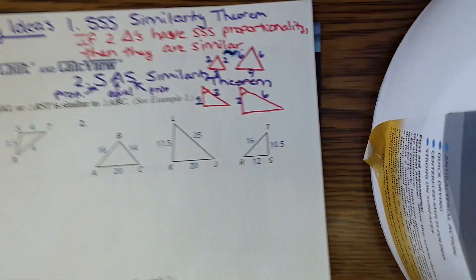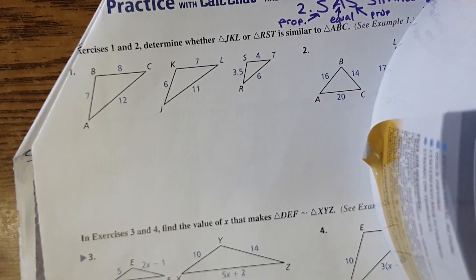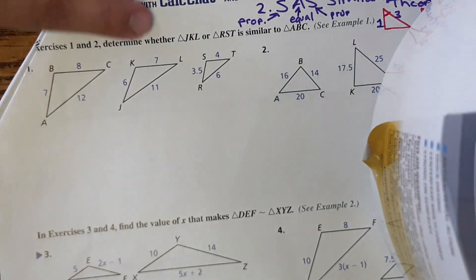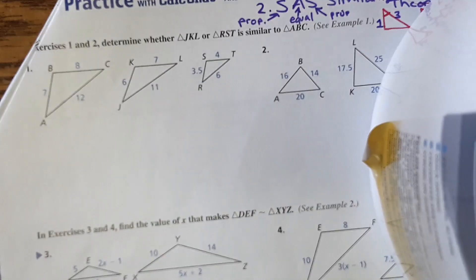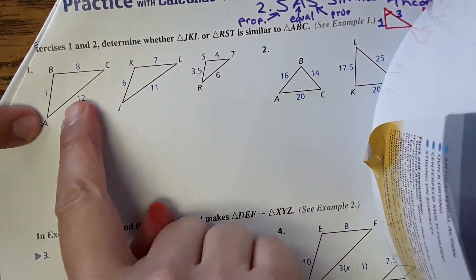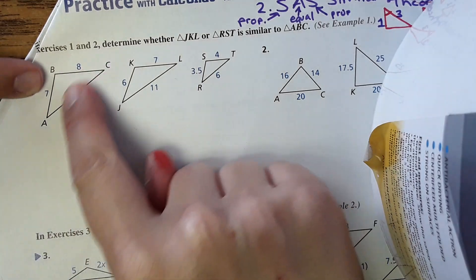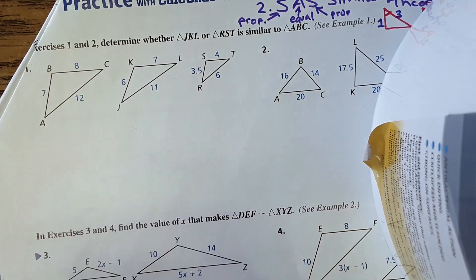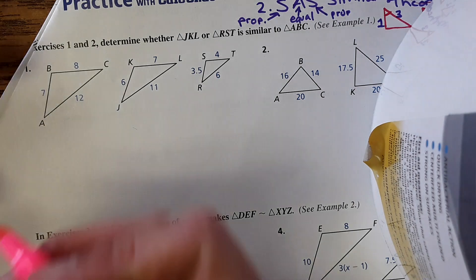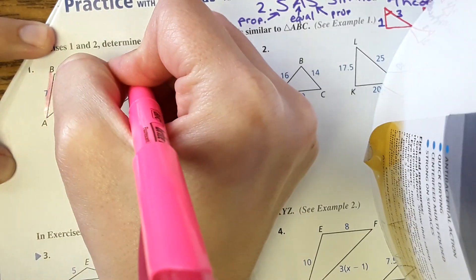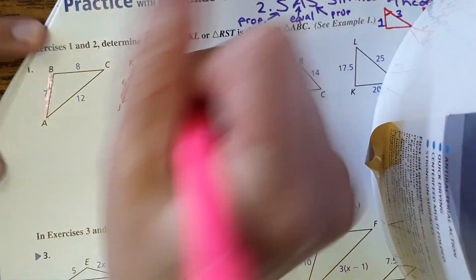Now we're going to apply it to the problems. Number one says: in exercises 1 and 2, determine whether triangle JKL and triangle RST is similar to triangle ABC. There are actually three triangles here. This is our original, and we're seeing if these are similar to it. Before I do anything, I'm going to match up corresponding parts — this corresponds with this, and it corresponds with this.